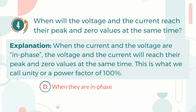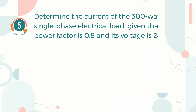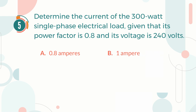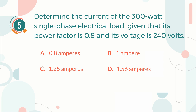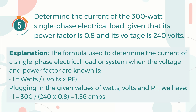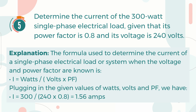This is what we call unity, or a power factor of 100%. Number five: Determine the current of a 300 watt single phase electrical load, given that its power factor is 0.8 and its voltage is 240 volts. A) 0.8 amperes, B) 1 ampere, C) 1.25 amperes, D) 1.56 amperes. The correct answer is D, 1.56 amperes. The formula used is: current equals power divided by the multiplication of voltage and power factor. Plugging in the values: current equals 300 divided by (240 × 0.8), giving a current value of 1.56 amperes.